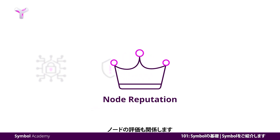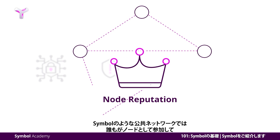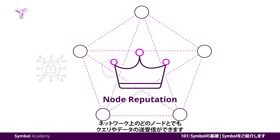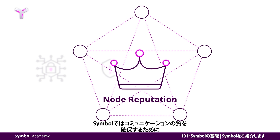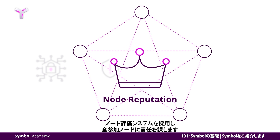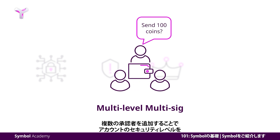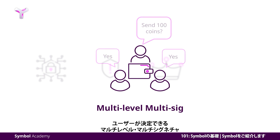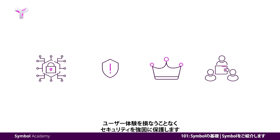Node reputation plays a part in this. In a public network like Symbol, anyone can participate to be a node to query from and send data to any node in the network. Symbol applies a node reputation system to keep every participating node accountable. Features like multi-level multi-sig give control to the user, allowing them to decide the level of security needed for their accounts by adding multiple guardians. Symbol takes security of the system very seriously without compromising the user's experience.